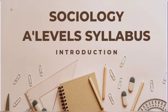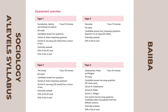There are four papers in your A-level sociology and there are a number of topics that you need to cover — paper one, paper two, paper three, and paper four. I'll be going through each of the papers in more detail, so let's start with paper one.